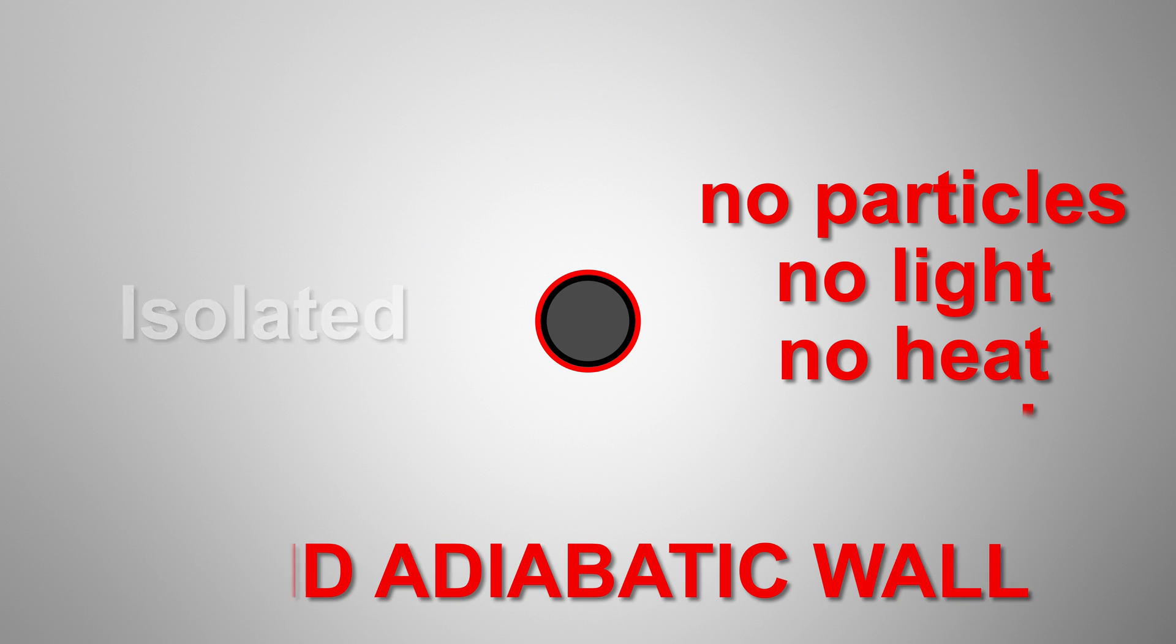Adiabatic walls can allow for the transfer of work, but if they are rigid as well, then they cannot. If an adiabatic wall is not rigid, then the system will be closed, but not isolated since work can cross the adiabatic wall.